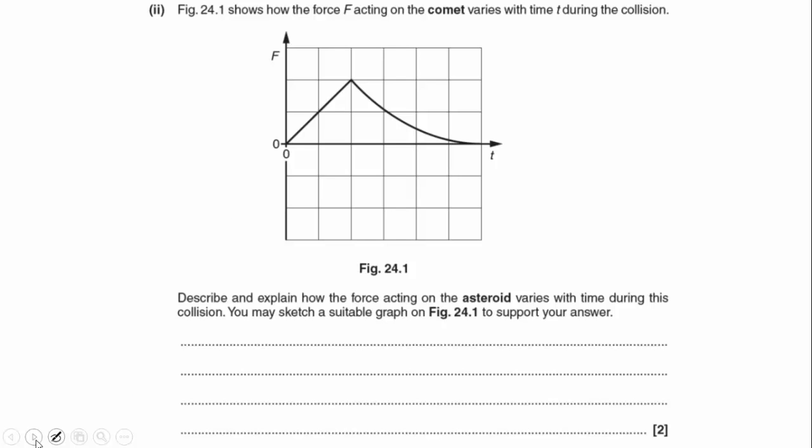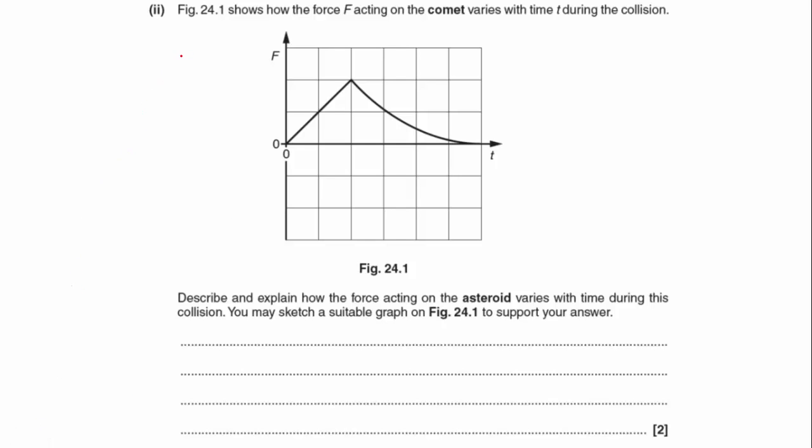Part b2: Figure 24.1 shows how the force F acting on the comet varies with time t during the collision. Describe and explain how the force acting on the asteroid varies with time during this collision. You may sketch a suitable graph on Figure 24.1 to support your answer. This is really asking, do you know Newton's third law? More importantly, can you apply Newton's third law?